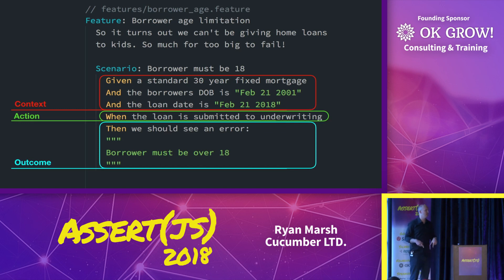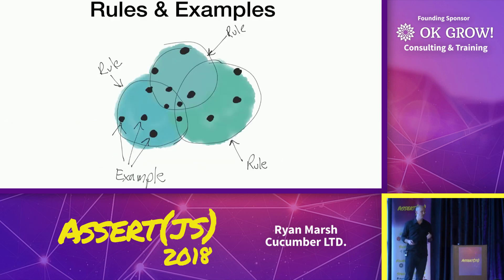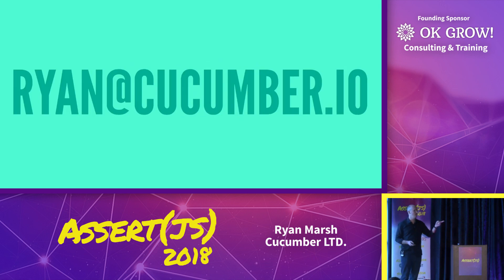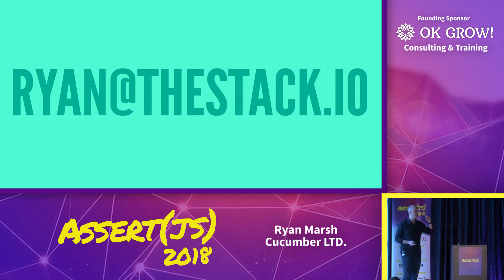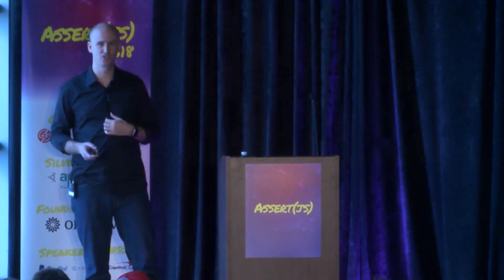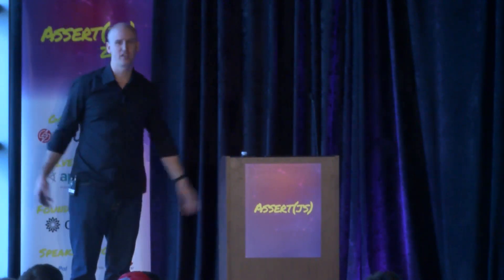This is a lightning talk, so if you want to learn more, we at Cucumber have a BDD Kickstart — it's a two-day class that gets everybody on your team up and running doing this together. We talk about rules and examples and how they tie together. For more on Cucumber: cucumber.io or github.com/cucumber/cucumber.js. You can email me about the BDD Kickstart class. And as Jason Langford, the first talker, said — you should hire external trainers. I'm a freelance external trainer. You should hire me. Thank you very much.